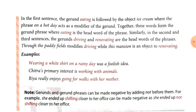In the first sentence, eating; second sentence, driving; third sentence, renovating — are the head words of the phrase, and they are together called gerund phrases. Some more examples: wearing a white shirt on a rainy day; walking with animals; going for walks with her mother — these parts of sentences are called gerund phrases.